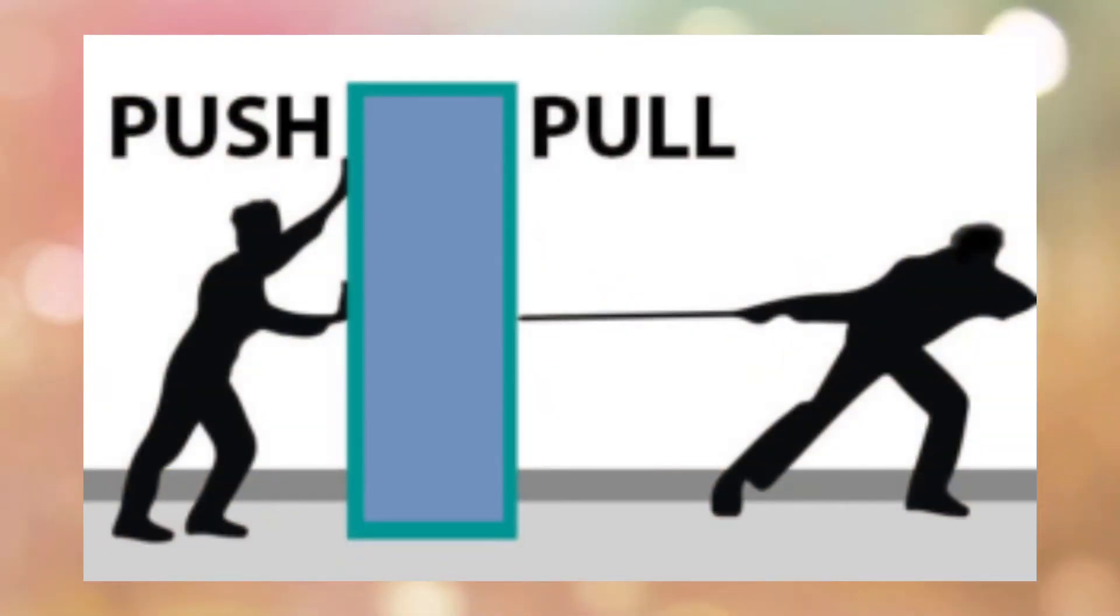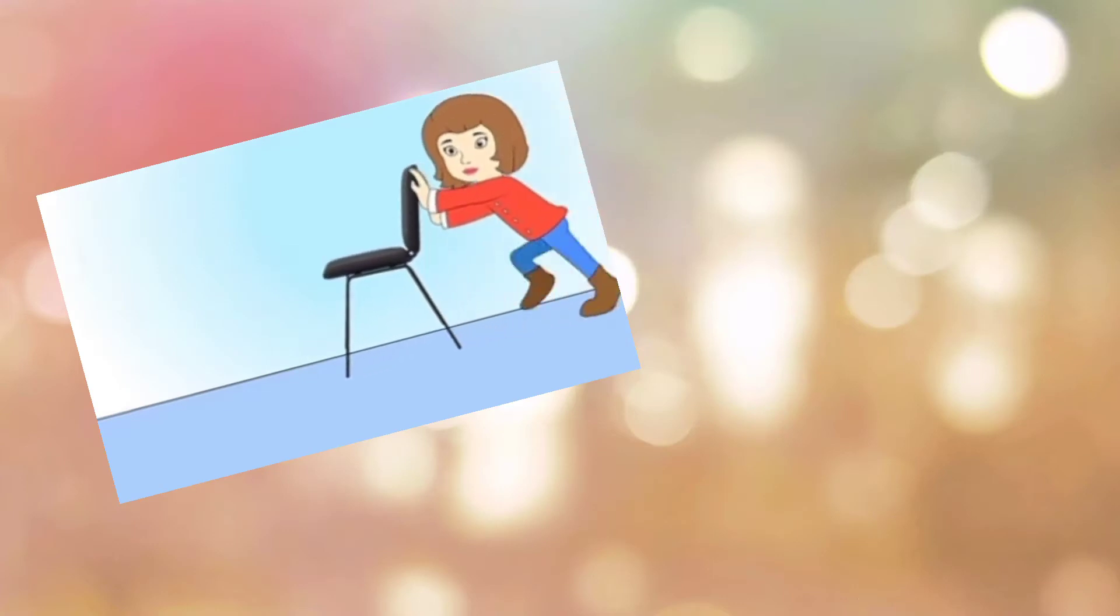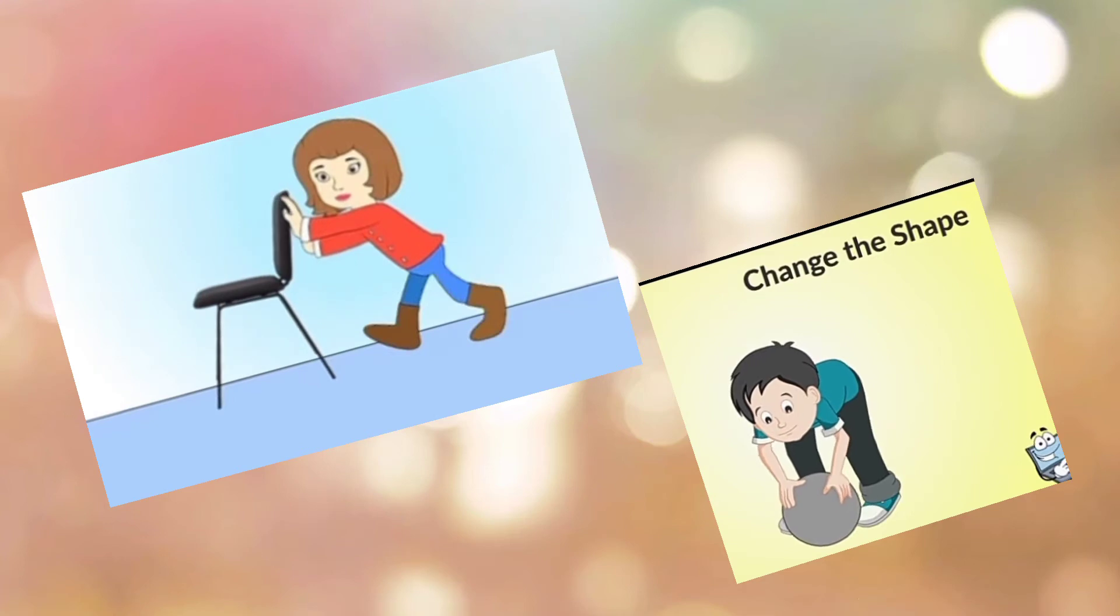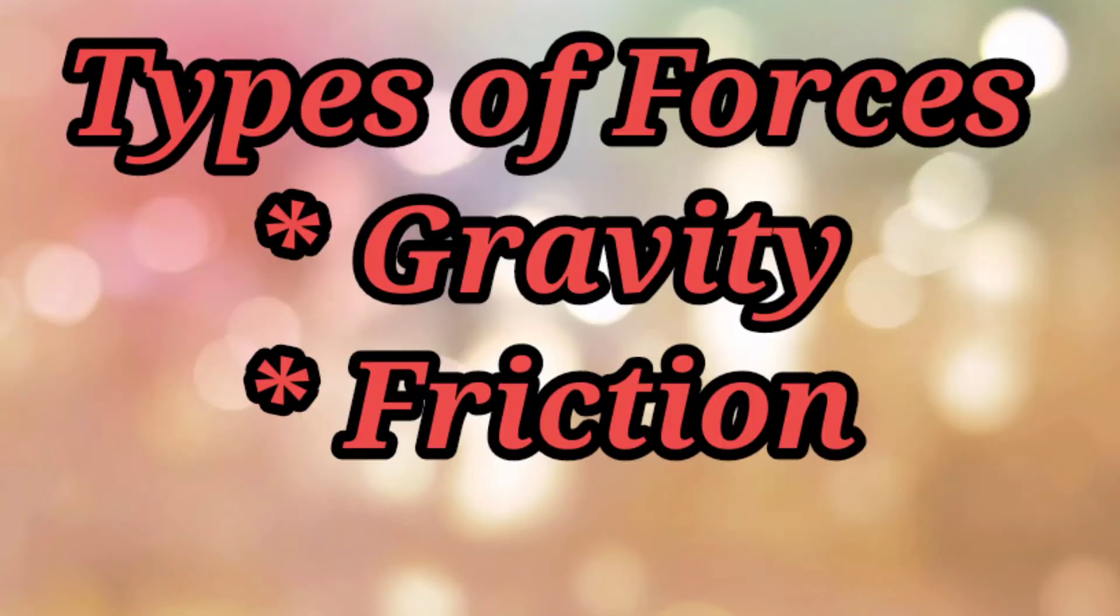In the last topic, we had learnt that a pull or a push on an object is called force. We can move objects or change their shape by applying force. We had also seen that in nature, there are two types of forces that are acting all the time, namely gravity and friction. So dear students, in today's session, we are going to learn about gravity and friction.